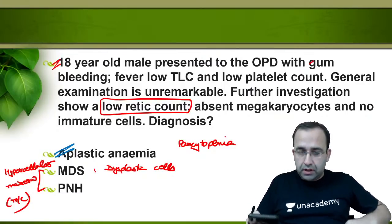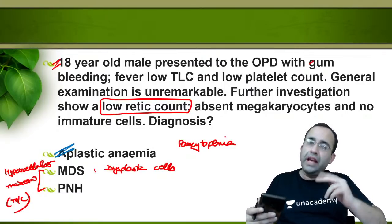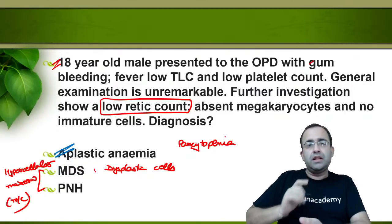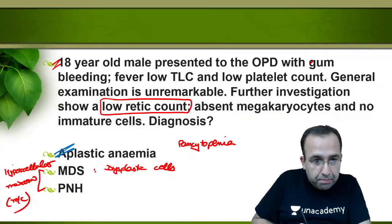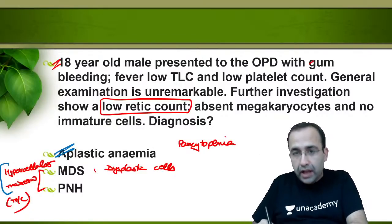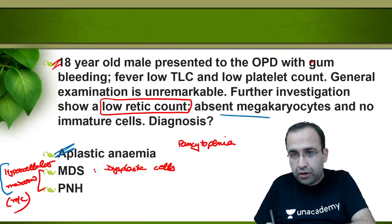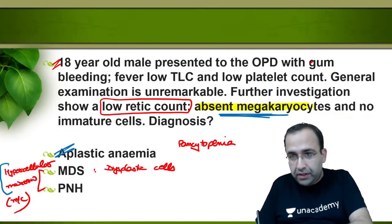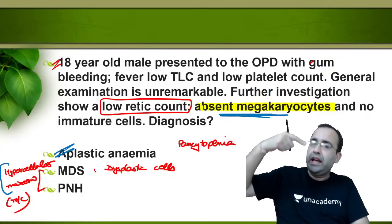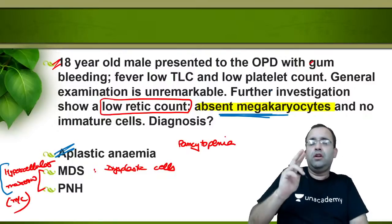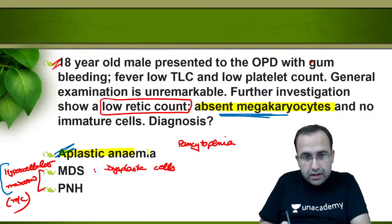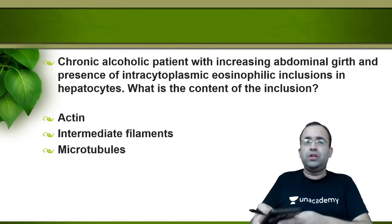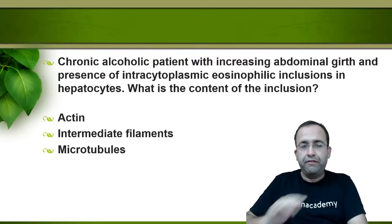The best answer in this case is aplastic anemia. PNH can progress to aplastic anemia, but here there is absence of megakaryocytes in bone marrow and peripheral smear — these two features favor aplastic anemia over PNH. The best answer is aplastic anemia.